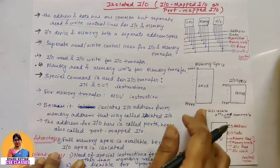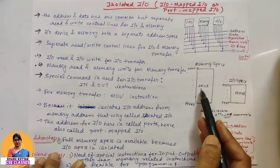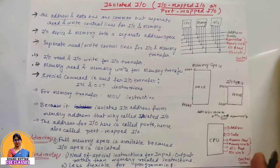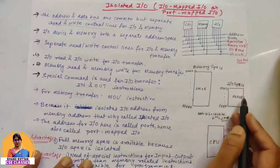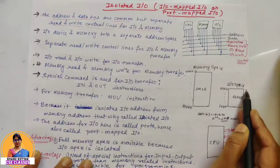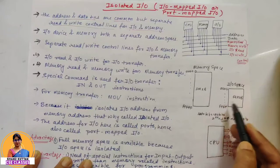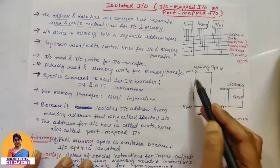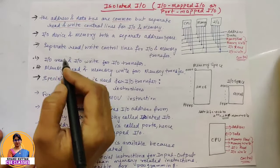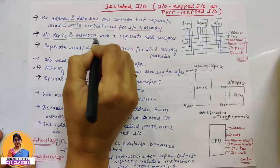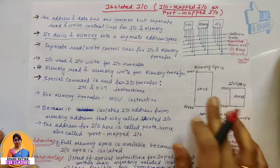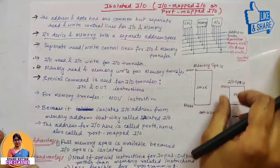For example, we have taken a memory space where the size of memory is 1 MB, and every word is 8-bit. So what happens in isolated I/O? The I/O device has a different address space, which we call I/O space, and the memory has a different address space, which we call memory space. The main important thing about isolated I/O is that I/O devices and memory both have separate address spaces.